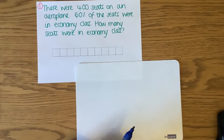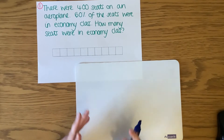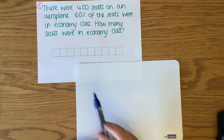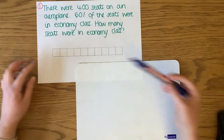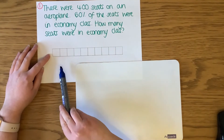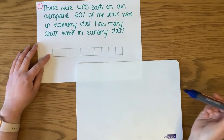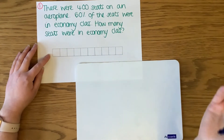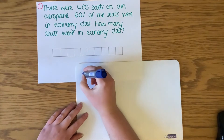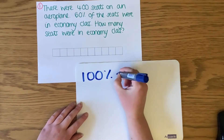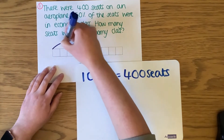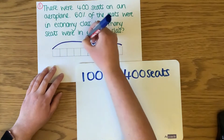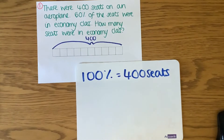First of all, what we need to do is think about our whole — our 100%. And what we can do is visualise parts of this question using our bar model. I've pre-drawn my bar model for us, and I have split it into 10 pieces, because my whole is my 100%, and my 100% is my 400 seats. So I know that the whole is my 400 seats, and I've split it into 10 pieces because 10 lots of 10 make up 100.